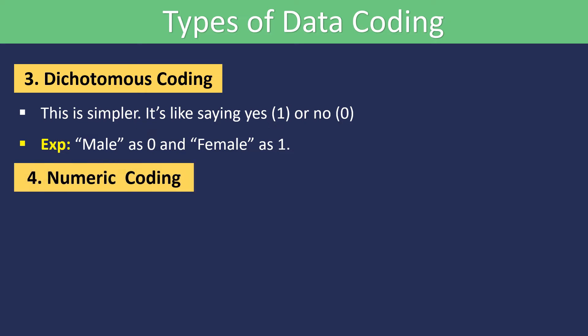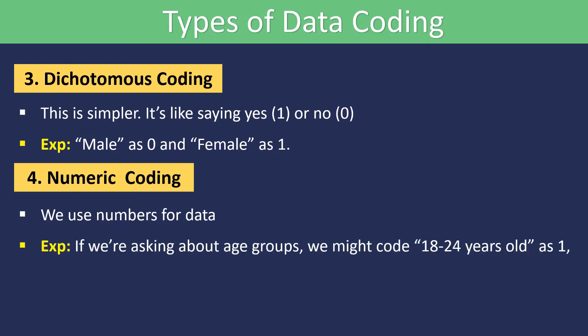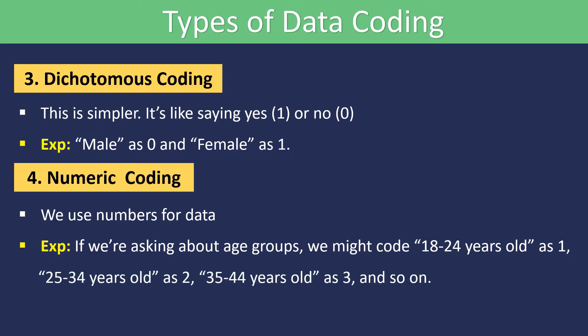Number four, numeric coding. This is when we use numbers for data. For example, if we are asking about age groups, we might code 18 to 24 years old as one, 25 to 34 years old as two, 35 to 44 years old as three, and so on.